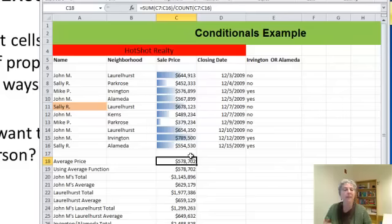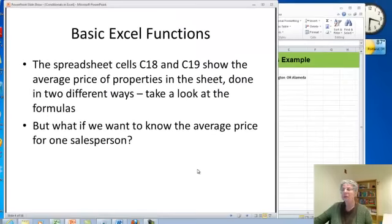Now I did that because I want to show you using some other functions in the same way, but there is actually an average function and let's look at that. So I did that in cell C19 here. You can see it's the average going from C7 to C16. Now that works fine if we want to know something like the total average of all the sales.